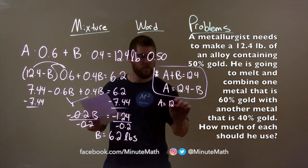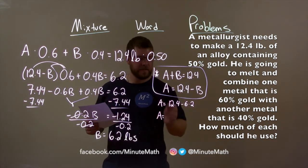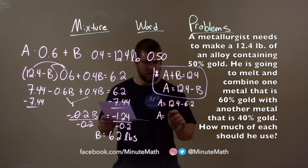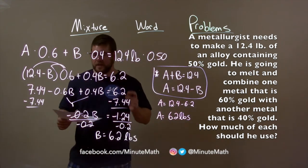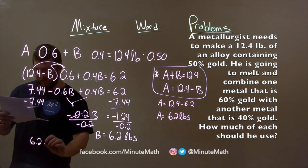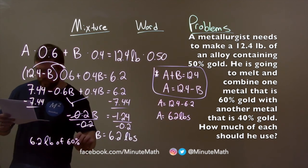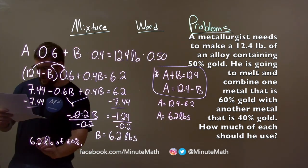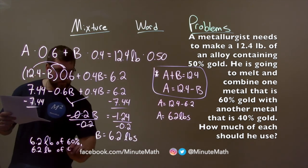So, A equals 12.4 minus 6.2. For A, our first metal, 12.4 minus 6.2 is also 6.2 pounds. So, our final answer, write it out here. We have 6.2 pounds of 60% gold and 6.2 pounds of 40% gold. And that is our final answer.